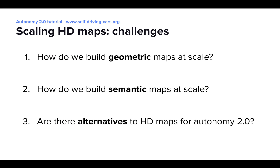In the remainder of the talk, I will look at existing processes for building HD maps, focusing on how we can build them at large scale. I will cover geometric and semantic maps separately. And at the end, I will discuss whether, in the long run, we see Autonomy 2.0 having the same map requirements as Autonomy 1.0, which is an open question.